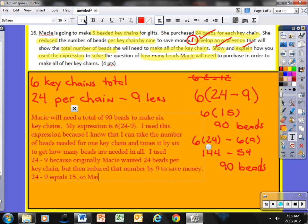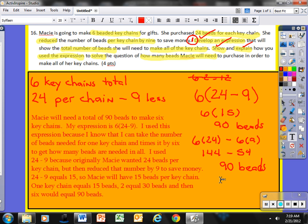24 minus 9 equals 15. So, Macy will have 15 beads per keychain. And then 6 would equal 90 beads. And you can then come to me later this week and discuss what you're going to do in order to improve your overall score. Thanks for listening. Take a good day. Have a good day. Bye-bye.